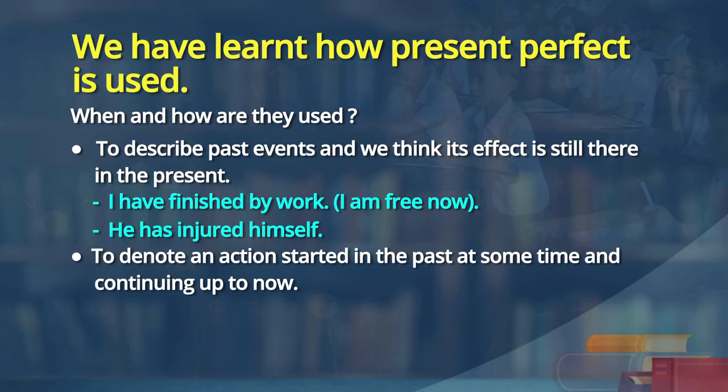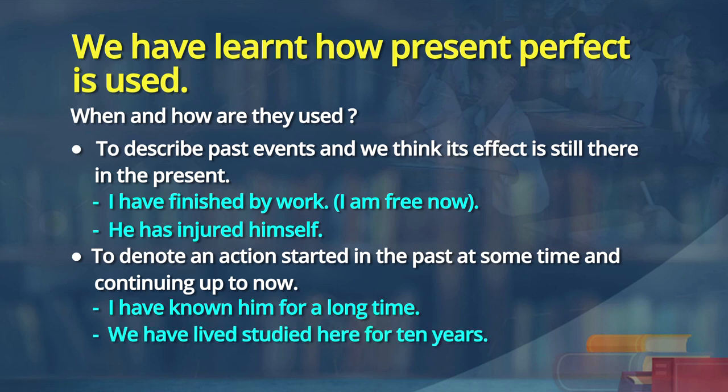The fourth occasion is to denote an action which took place in the past but is continuing now. For example, 'I have known him for years,' 'We have lived here for 10 years.' Present perfect continuous — 'I have been living in this place' — is another form, but present perfect can also be used this way. These are the four occasions, learners.